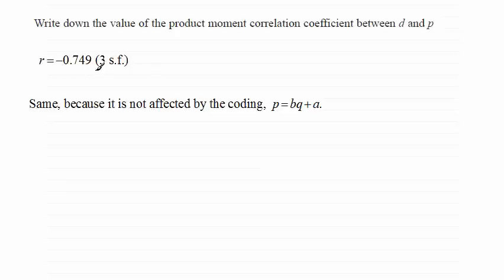Okay, so it's minus 0.749 then to three significant figures, the same as it was in part B.